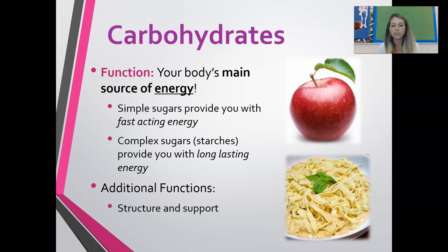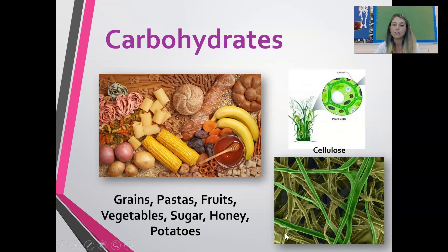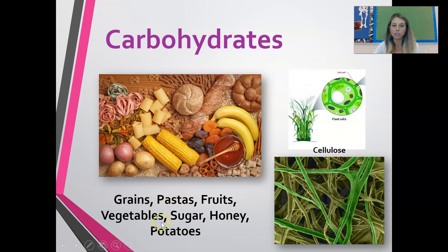Carbohydrates are also used for structure and support. For example, cellulose — the stringy, tough material in celery — is a good structural material for plants. Examples of foods with significant amounts of carbohydrates include grains, pastas, fruits, vegetables, sugar, honey, and potatoes.